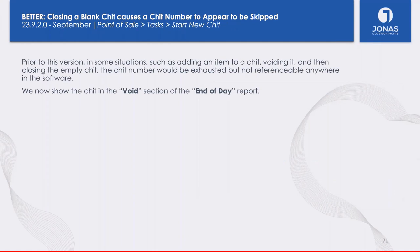From an audit standpoint, we fixed an issue where closing a blank Point of Sale ticket — one with no member selected and no items added — was not always being saved. That chit number would get skipped, which is a problem for auditing since every chit number needs to be accounted for. We now ensure that empty chits are closed and marked as voided, so they appear in the void section of your end-of-day report. This was added in the September 2023 release (920).